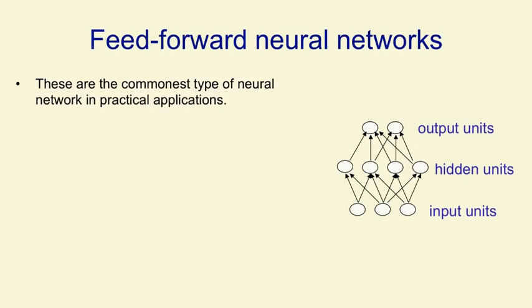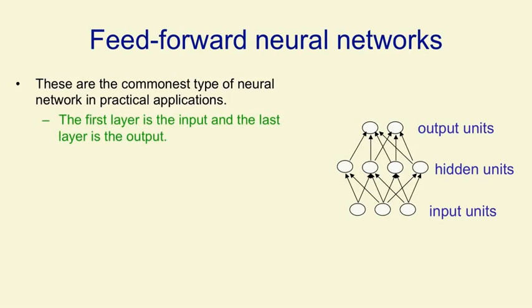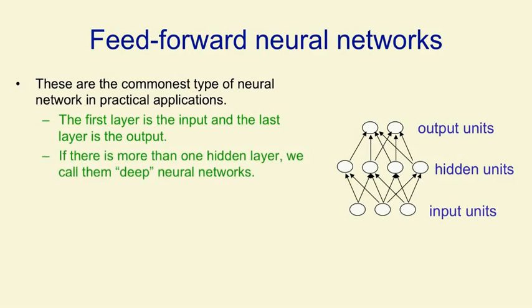The commonest type of neural network in practical applications is a feed-forward neural network. This has some input units in the first layer at the bottom, some output units in the last layer at the top, and one or more layers of hidden units. If there's more than one layer of hidden units, we call them deep neural networks.